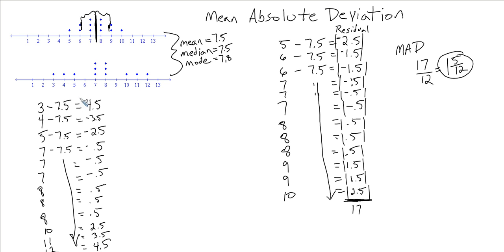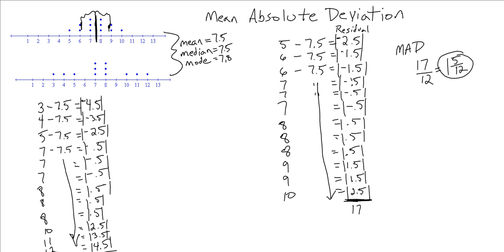Taking the absolute value of all of these residuals and adding them all together, we get: 9, 16, 21, 22, 23, 24. And 24 divided by 12 gives us our MAD — our mean absolute deviation — of 2.